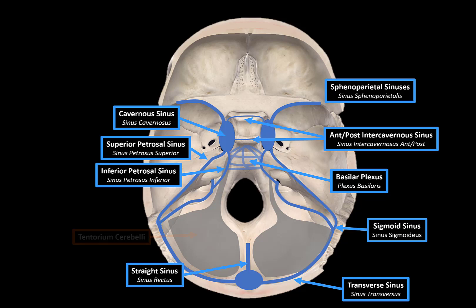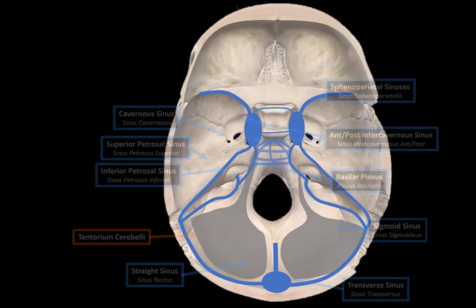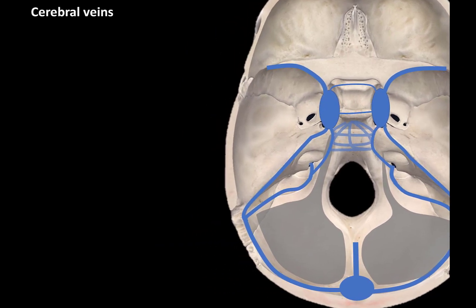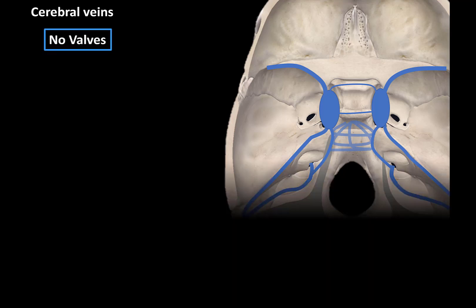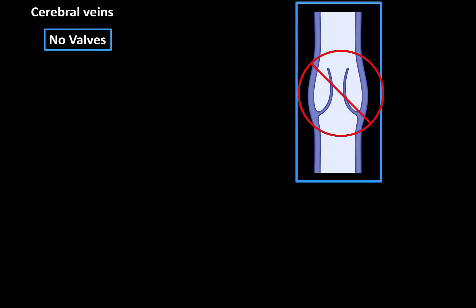Here we see the tentorium cerebelli, which lies between the cerebellum and the cerebrum. The first thing we need to know is that the cerebral veins have no valves. Unlike the veins of the systemic circulation, which are equipped with valves to prevent backflow of blood, the cerebral veins have no valves, just like the dural sinuses.